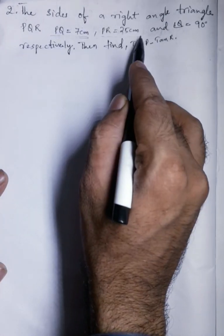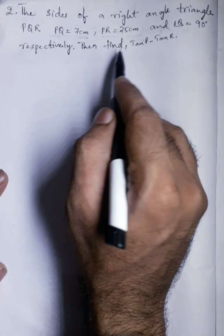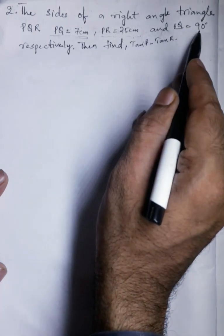PR equals 25 cm. This is the second side. And angle Q equals 90 degrees respectively.